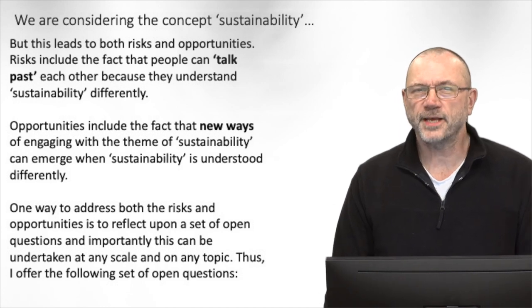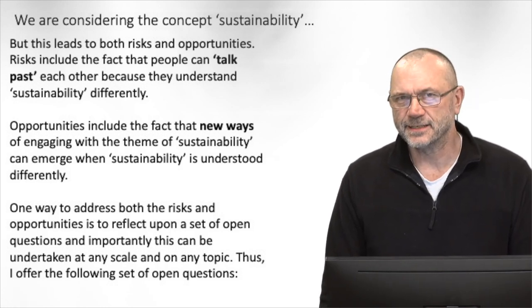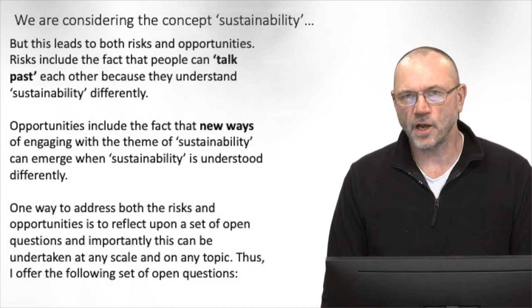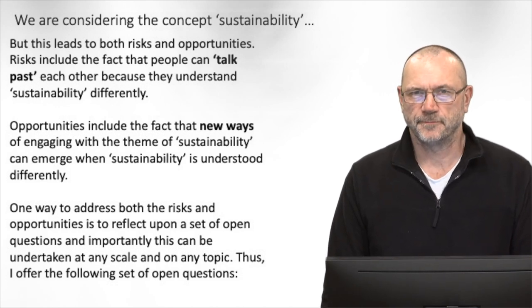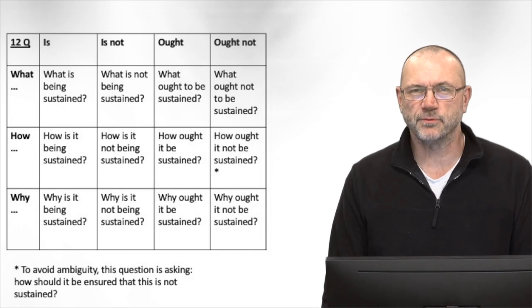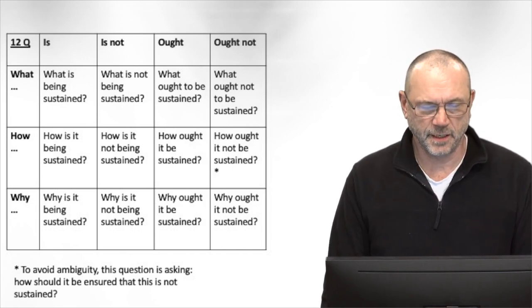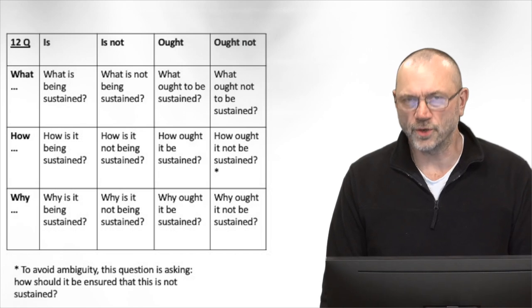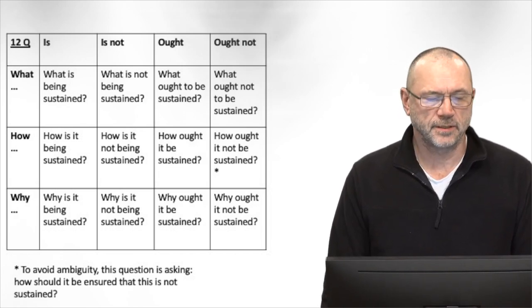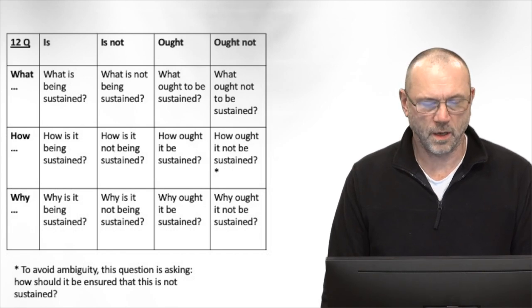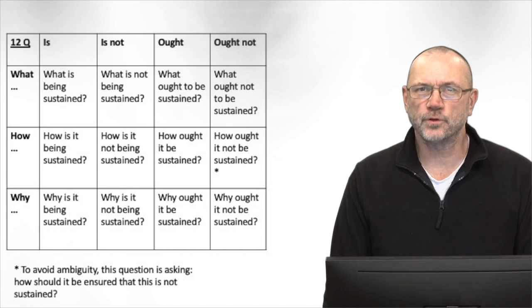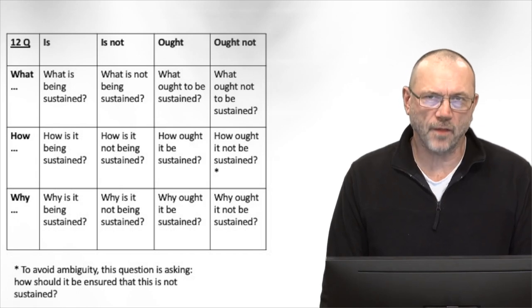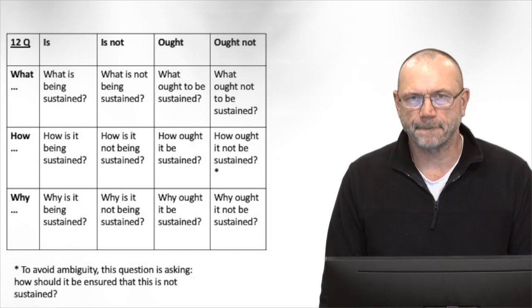Importantly, this reflection can be done at any scale and on any topic. Let's look at this table to understand how it works. Across the top we have: is, is not, ought, ought not. And down the rows we have: what, how, and why. This is a powerful set of conceptualisations because we can explore the concept of sustainability using this matrix.